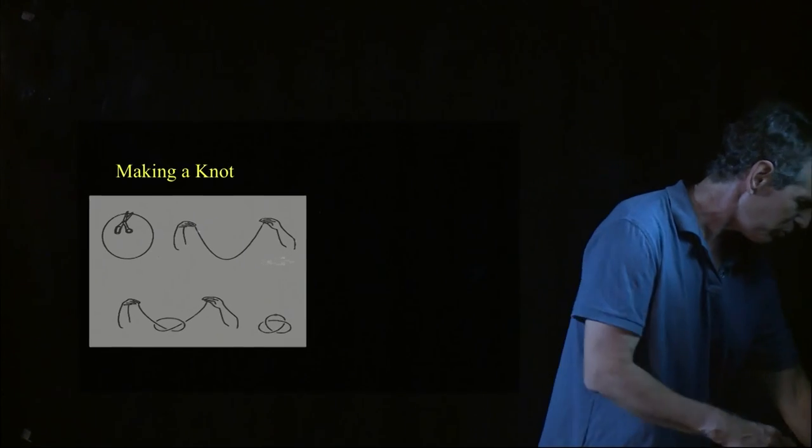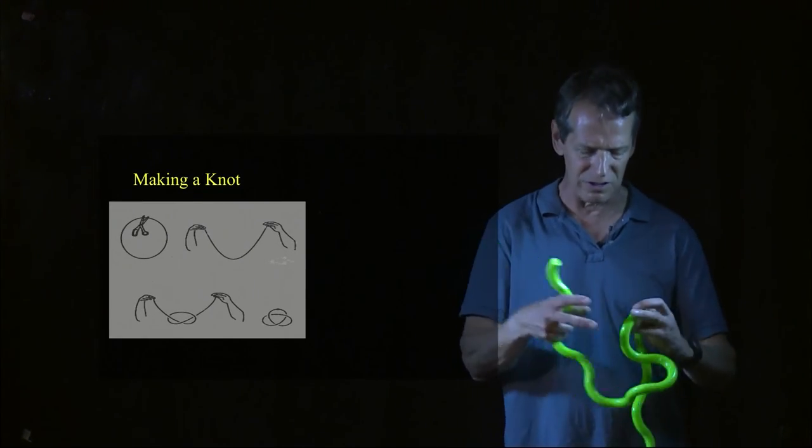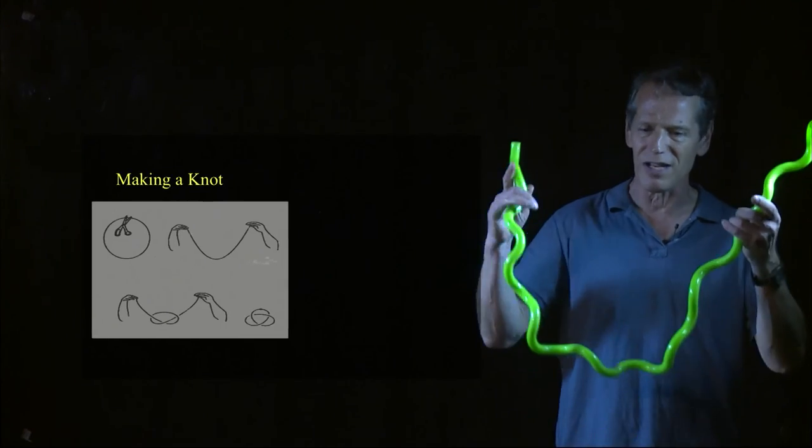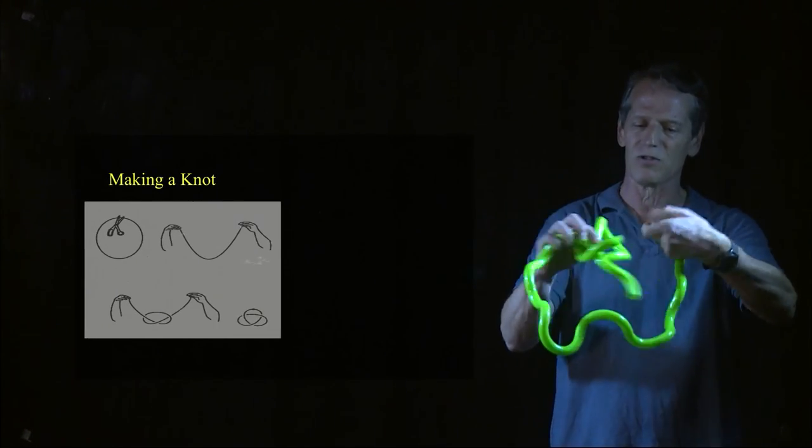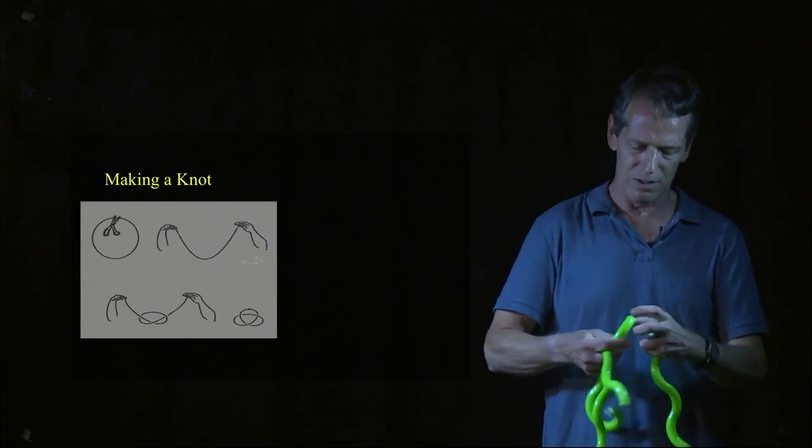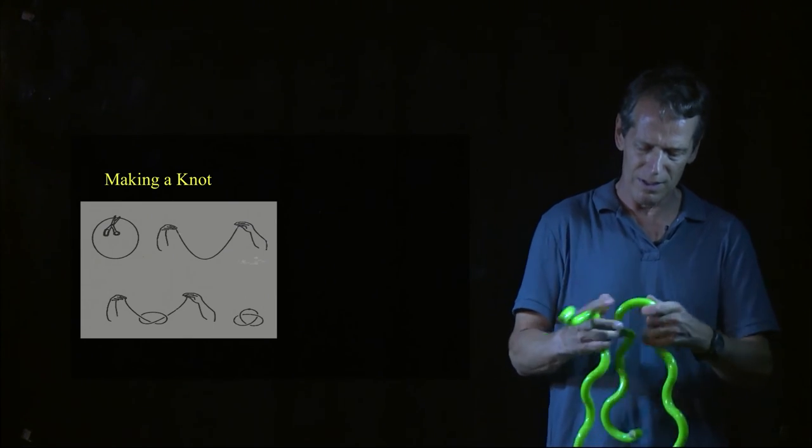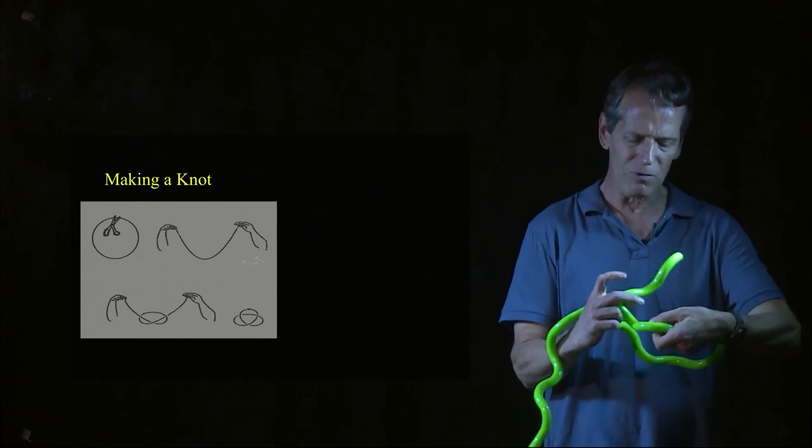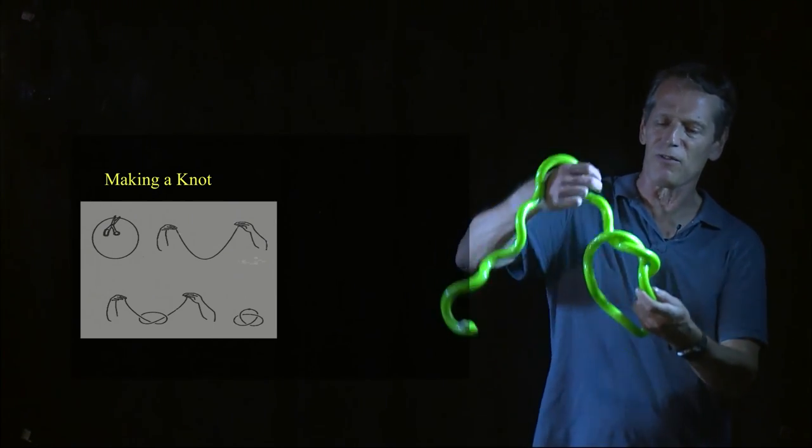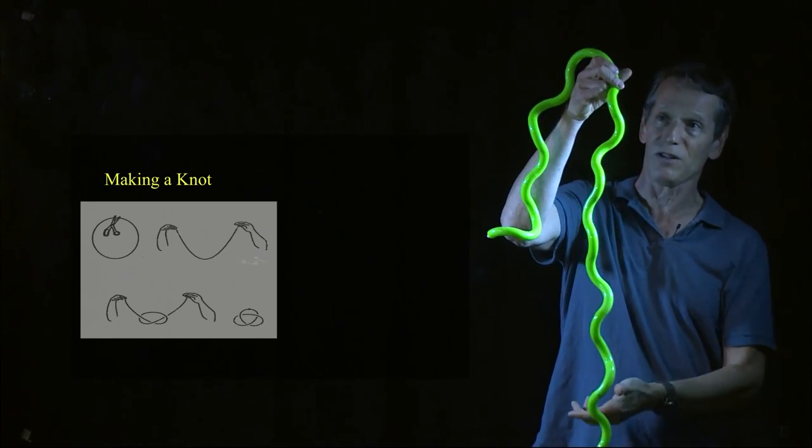So I want you to think about it this way. Imagine you take a toy. I'm going to take this little toy called a tangle right here. And imagine I take it and I tie a knot in it. So I'm going to tie a knot in this. First, I have to make sure it's snapped together. And I'm going to tie a knot in this. And right now, I can get that knot off there very easily, right? All I have to do is just push a little bit. I can disentangle it.